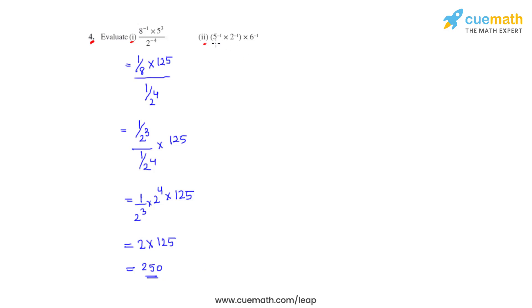The second bit is 5 raised to negative 1 times 2 raised to negative 1, whole raised to 6 raised to negative 1. The powers are negative for each of the terms, so we can write it as 1 over 5 times 1 over 2, this whole is multiplied to 1 over 6.